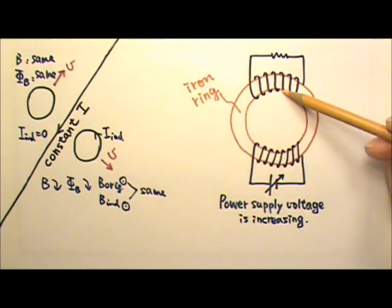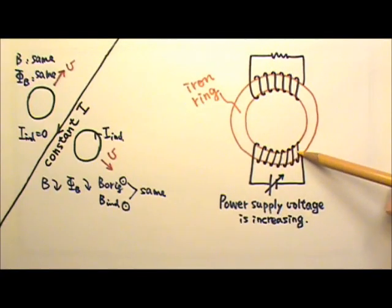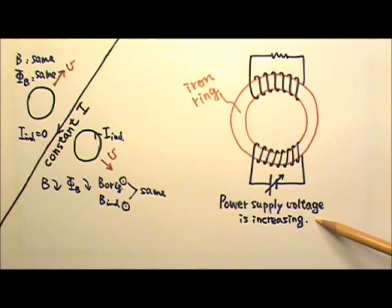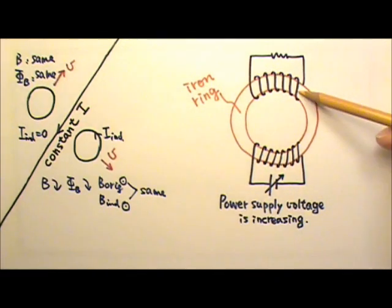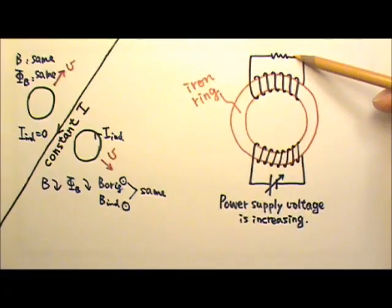Two coils of wire are wrapped around an iron ring. One coil is connected to a DC power supply with increasing voltage. The other coil is connected to a resistor. Find the direction of the induced current in this resistor.